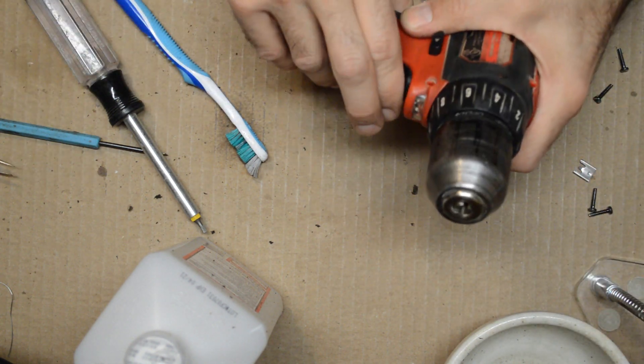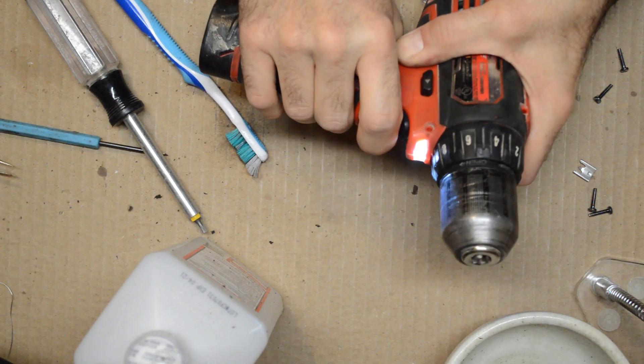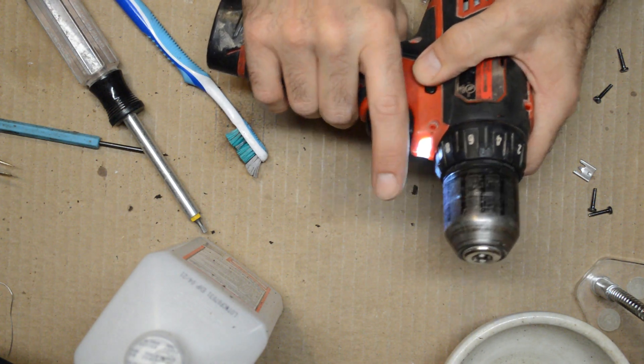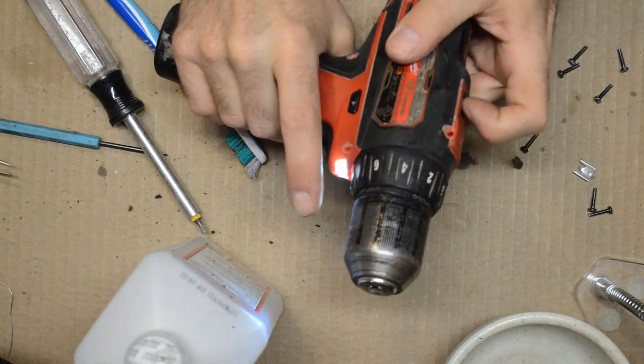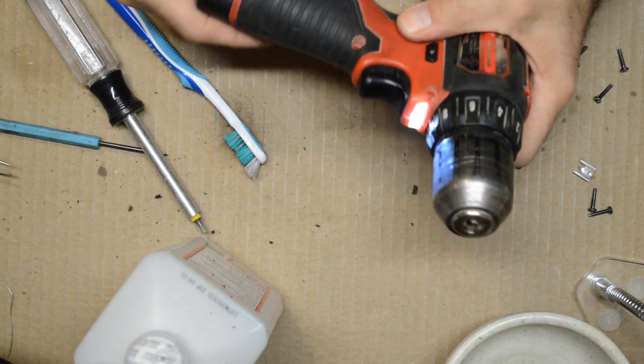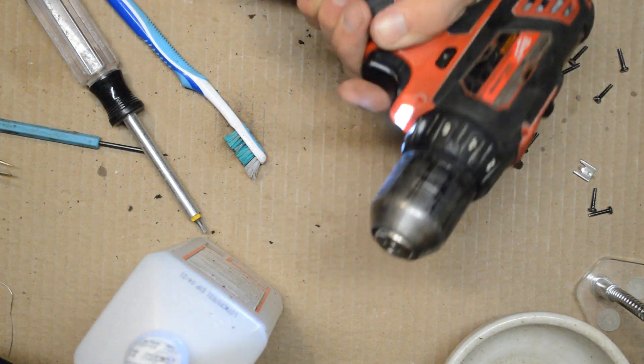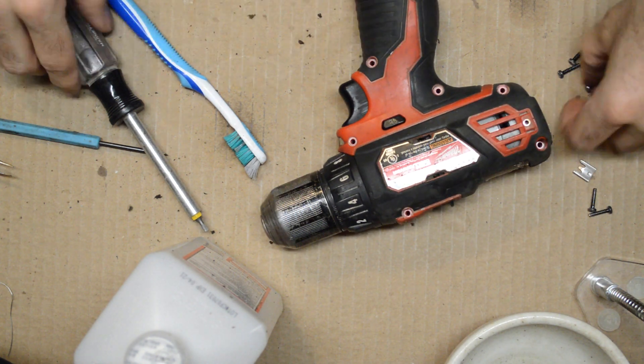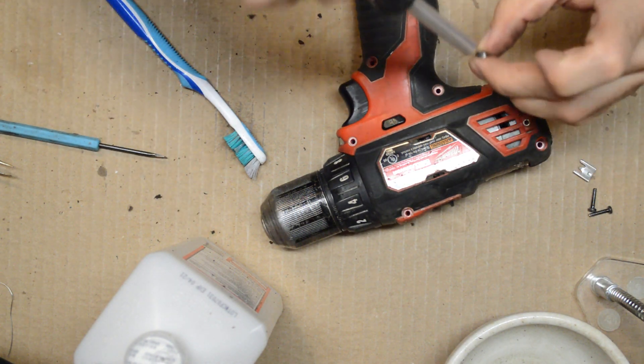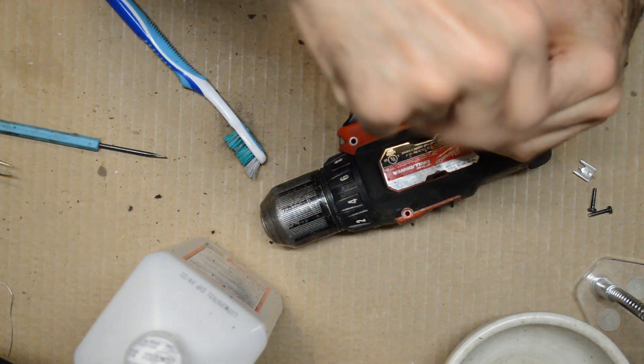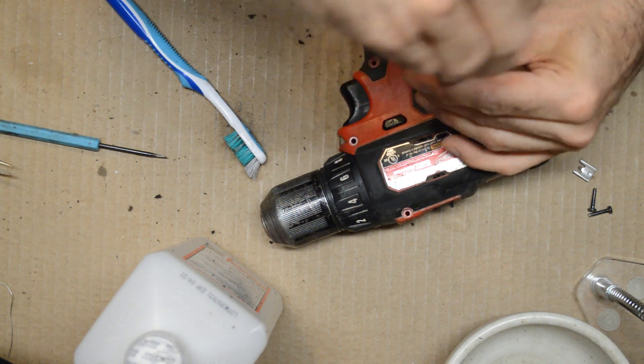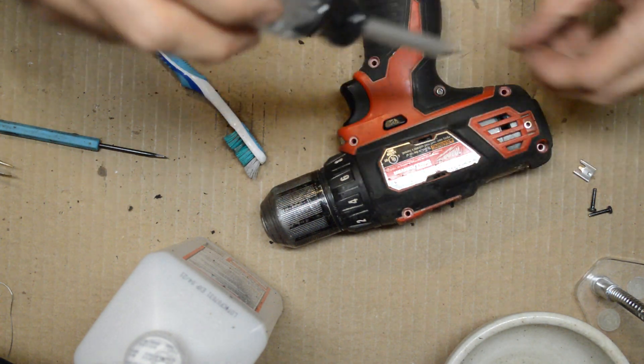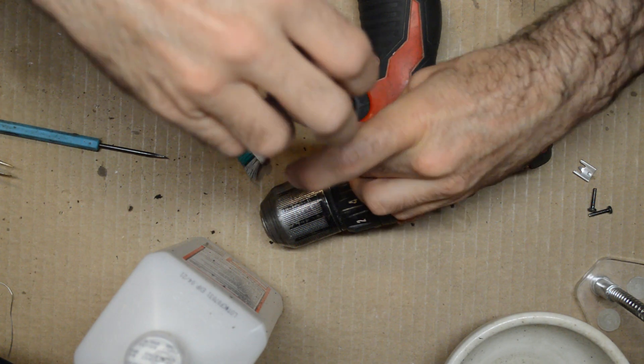Alright, so everything seems to still work. So let's get these screws back in it. I think it was just some sawdust or something in there, stopping the switch from coming out all the way.